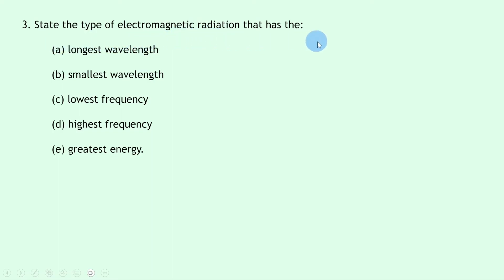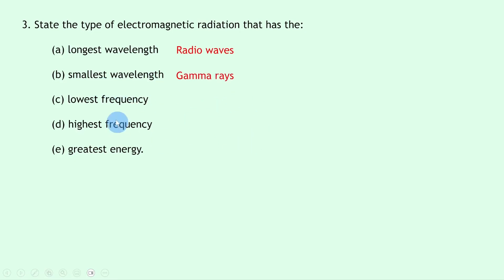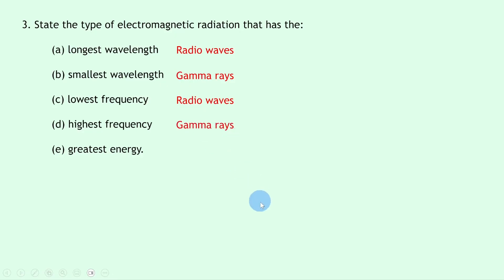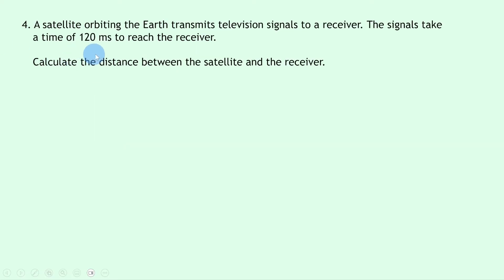Question 3a says: state the type of electromagnetic radiation that has the longest wavelength — that's radio waves. For smallest wavelength, we have gamma rays. For lowest frequency, which is the same as longest wavelength, we have radio waves. For highest frequency, which is the same as smallest wavelength, it must be gamma rays. And the type with the greatest energy is also gamma rays — they're the most dangerous.